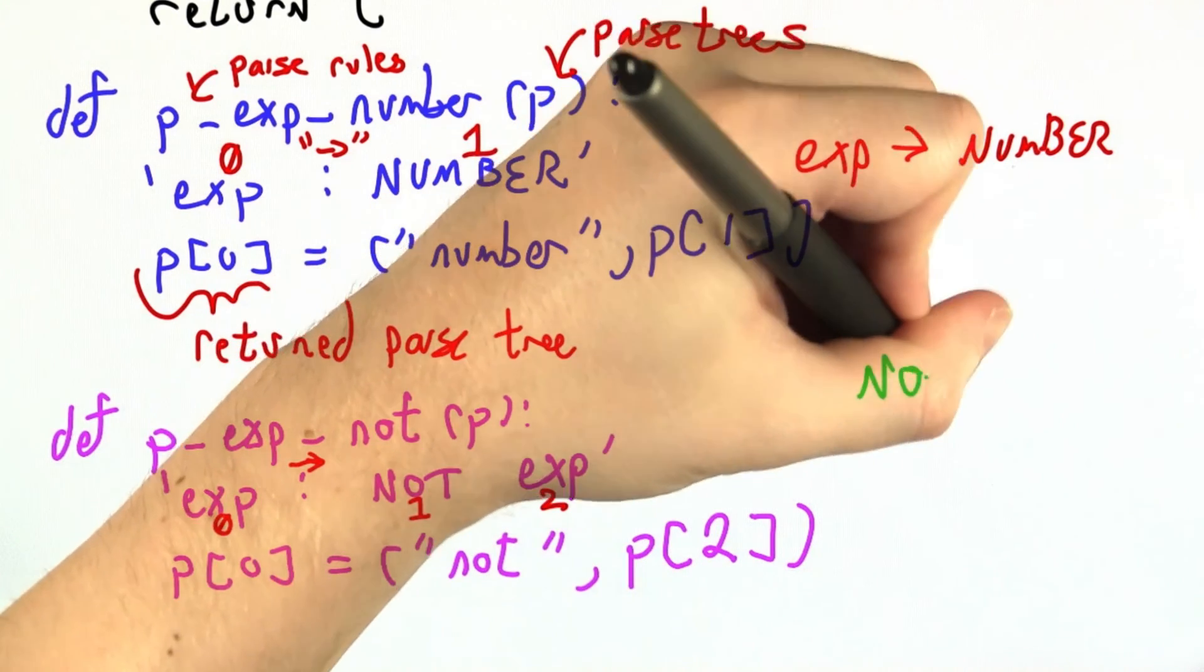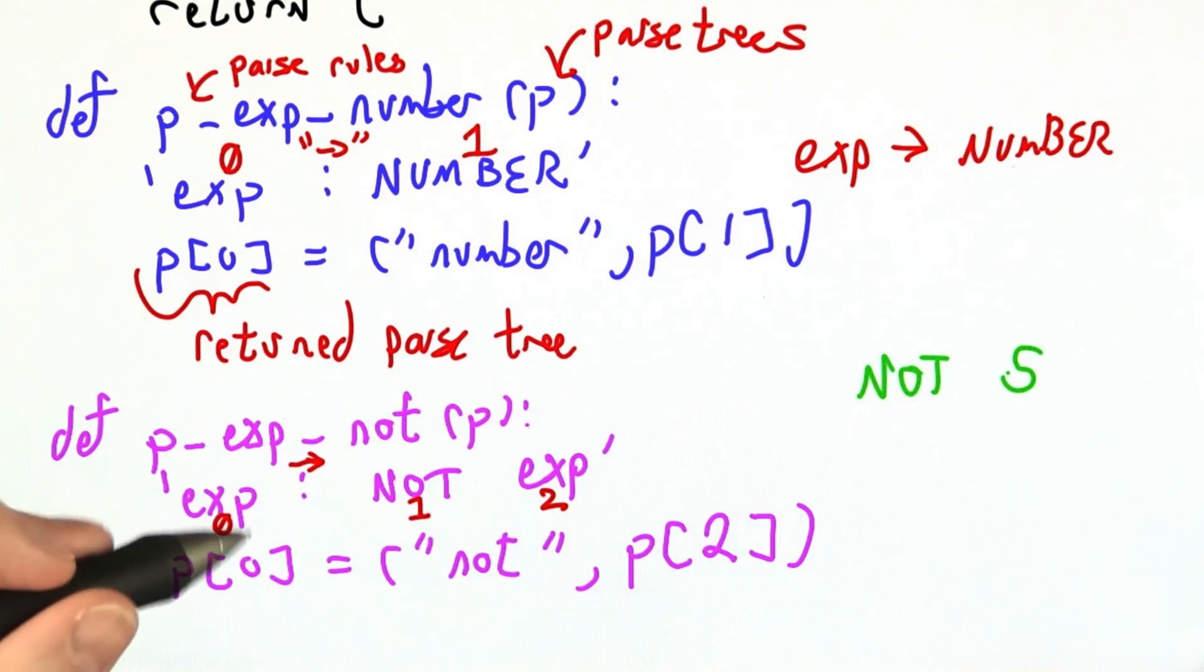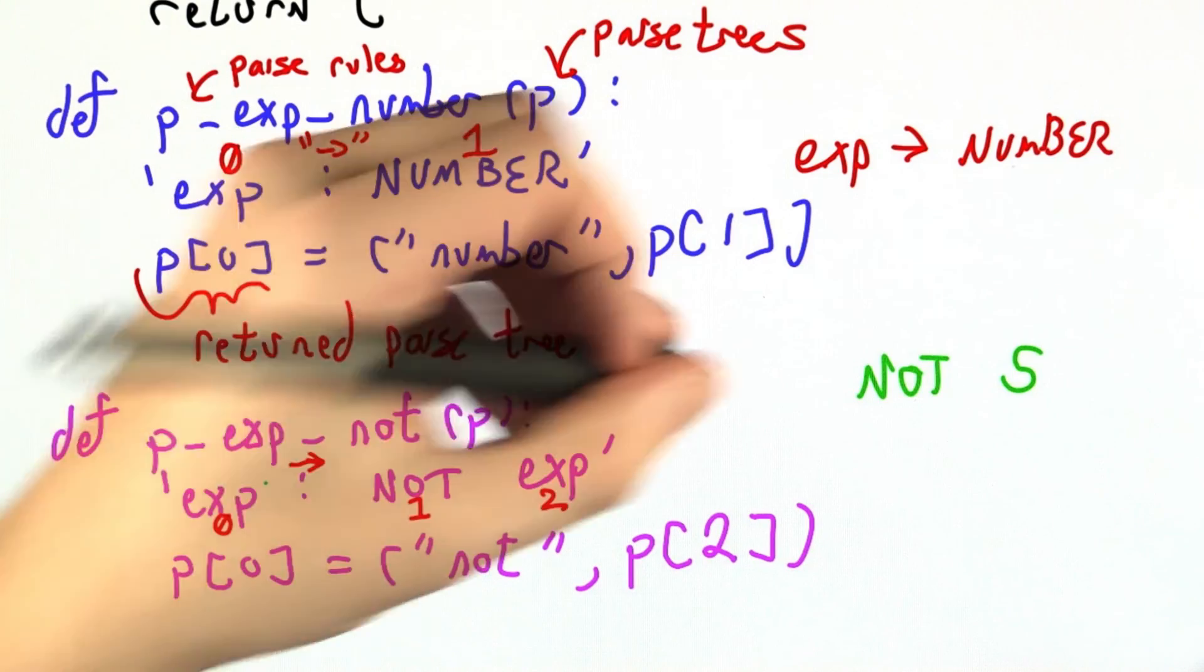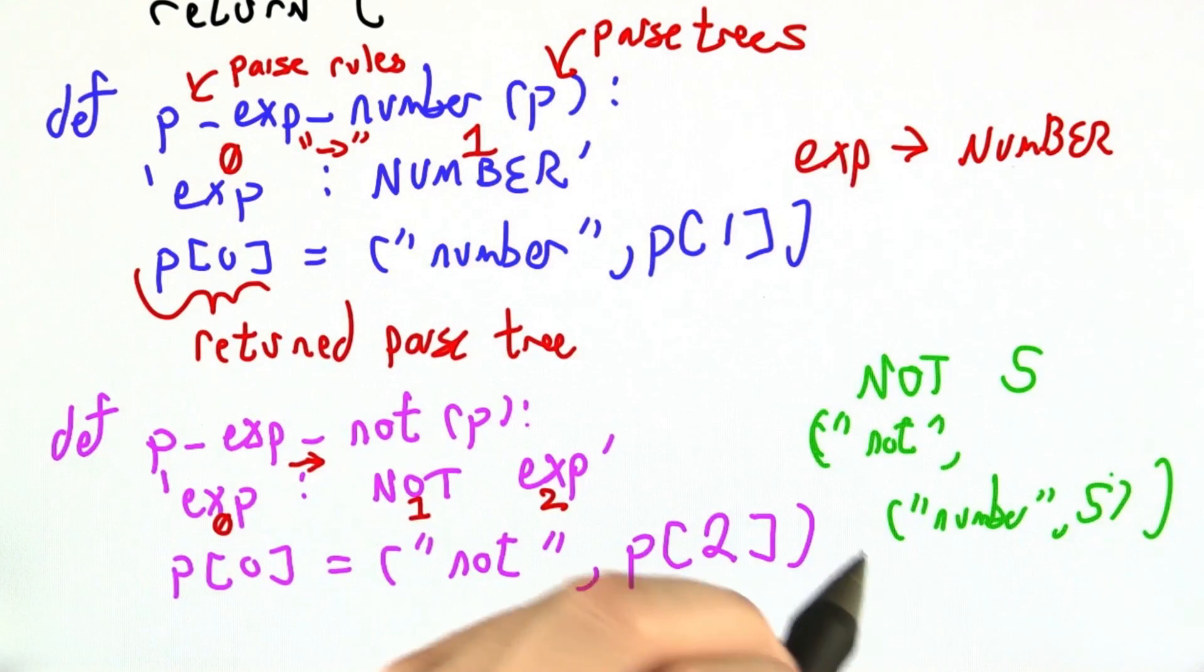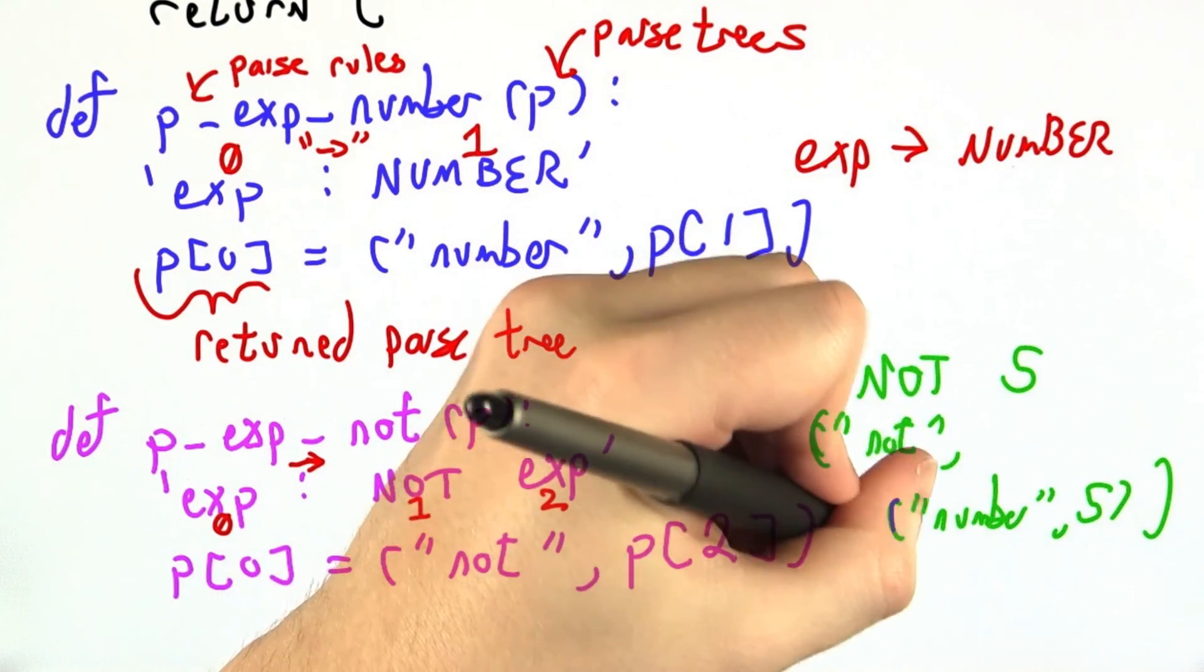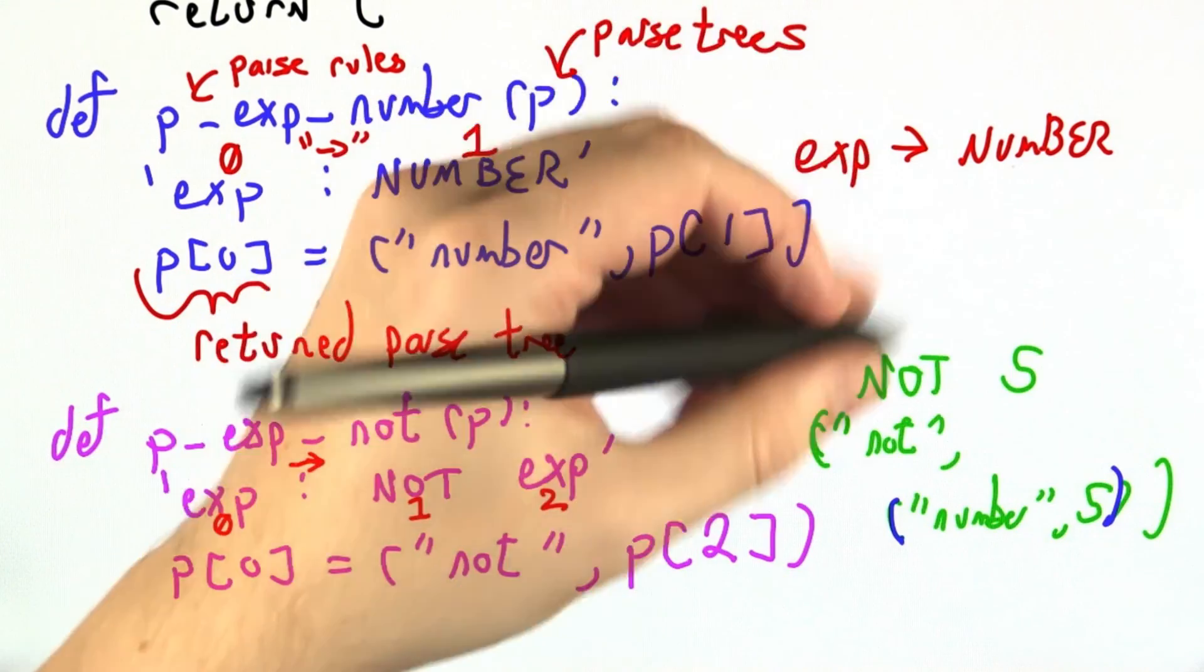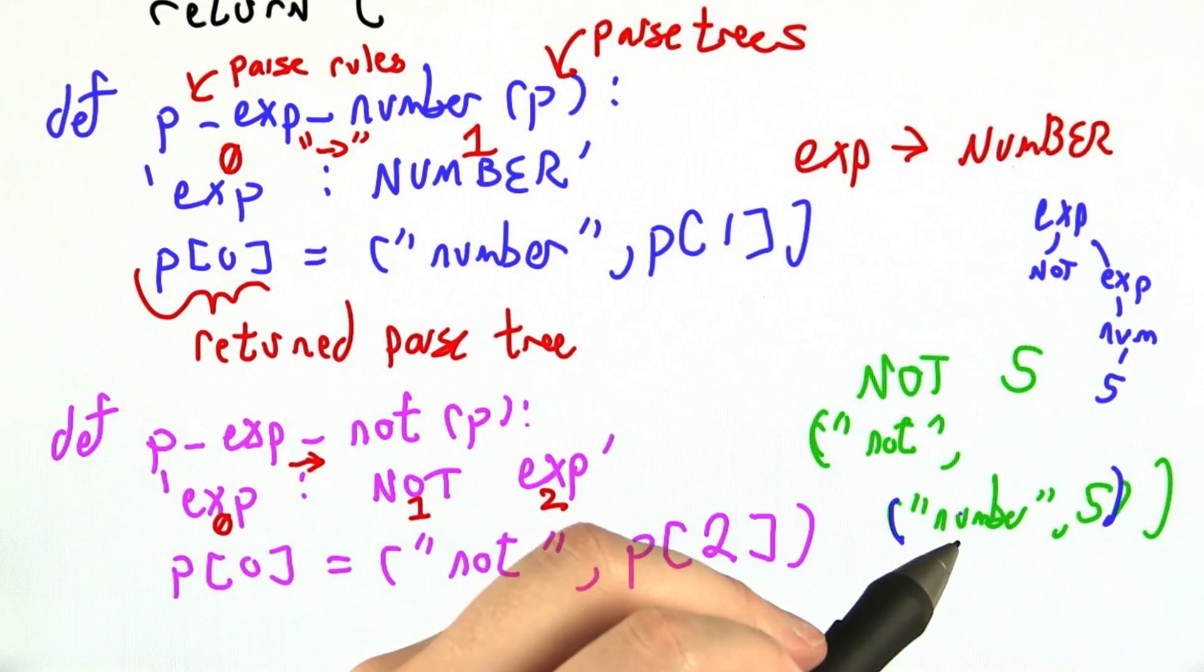If we were to see the input not 5, executing these two rules in the right order, this one first and then that one, would give us this tree, not number 5, and note the nesting. I could alternatively draw it as, this is just a Python way of encoding this visual representation.